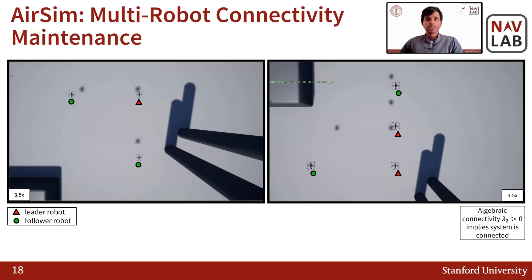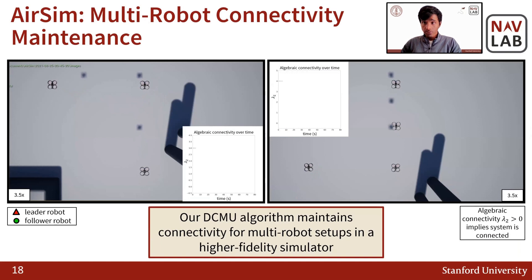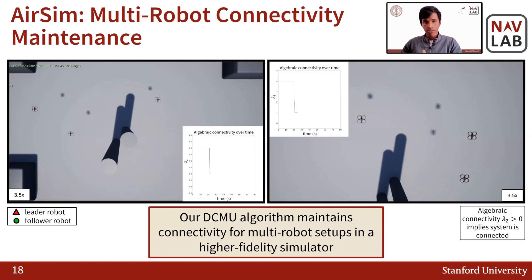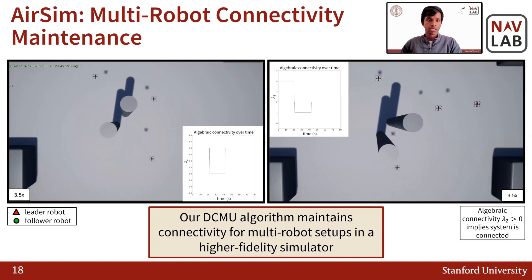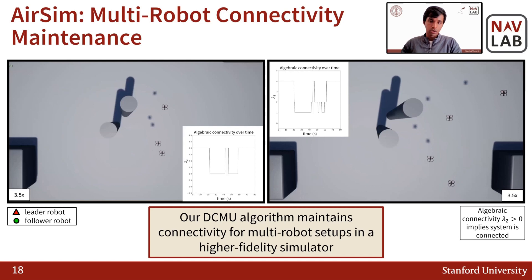Next, we consider multi-robot systems with different configurations. As the leader robots move, the follower robots follow in order to maintain connectivity. You can see the algebraic connectivity values across time, and the main takeaway is that the algorithm is able to maintain the algebraic connectivity value greater than zero during the run.